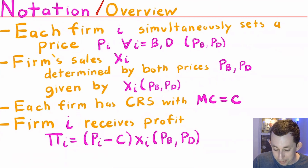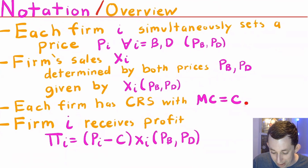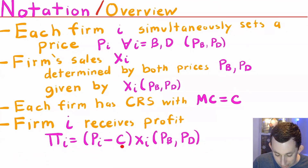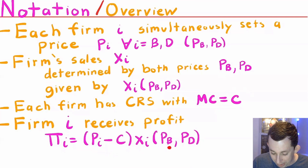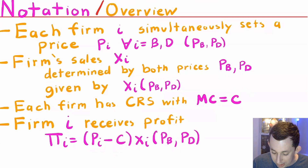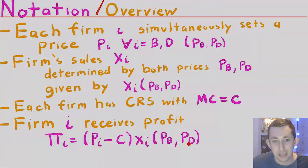To keep things simple, we'll say that Bill and Dave both face constant returns to scale production functions and each have a marginal cost equal to some value c. Both Bill and Dave earn a profit, which we call profit sub i. That profit is just the price they set minus their marginal cost — the money they make on each pastry — times the number of pastries they sell. So Bill's profit is (p sub b minus c) times x sub b, which is a function of both p sub b and p sub d.